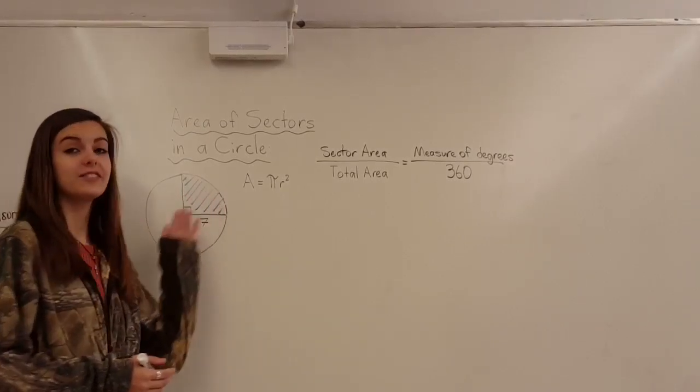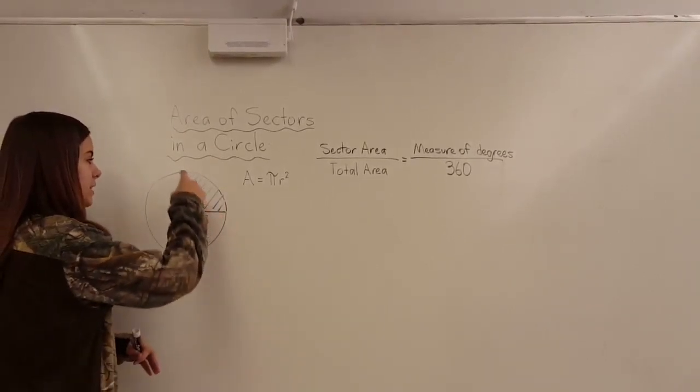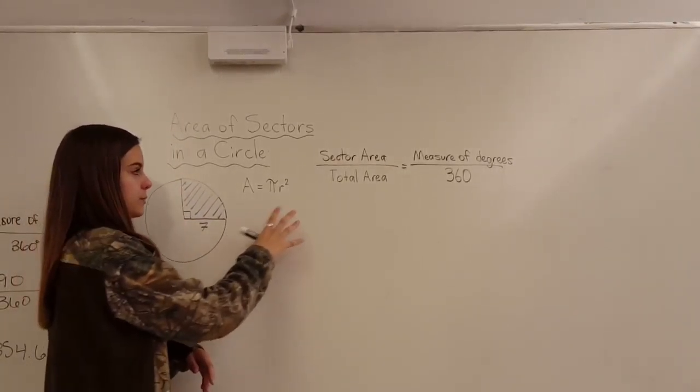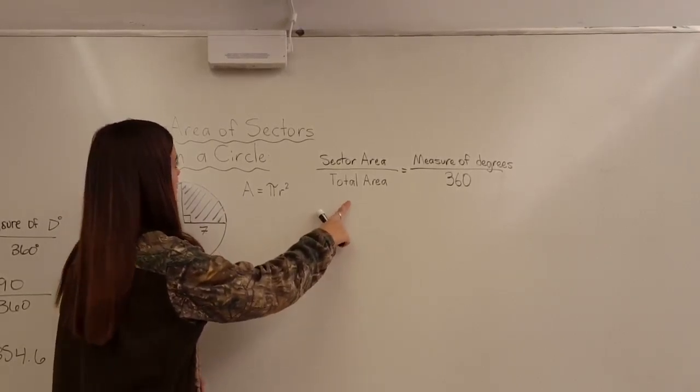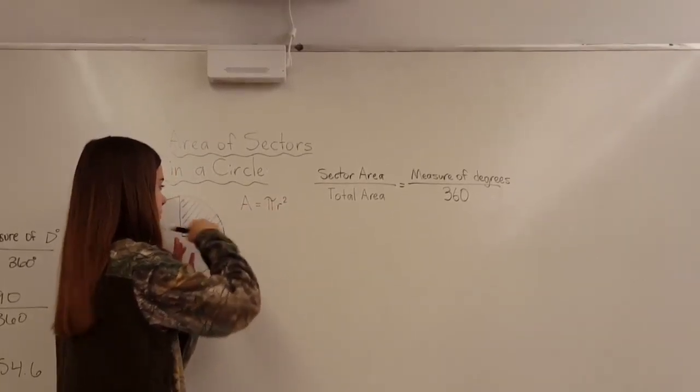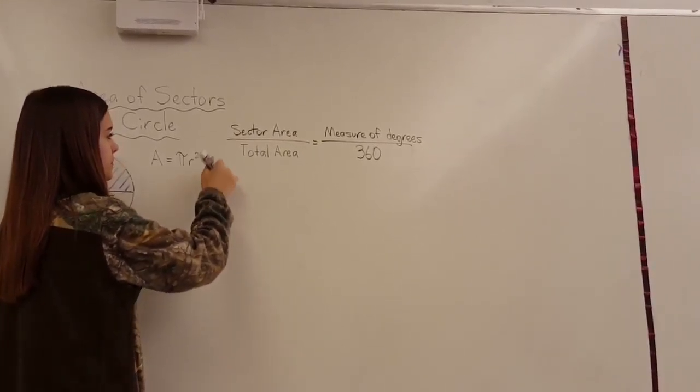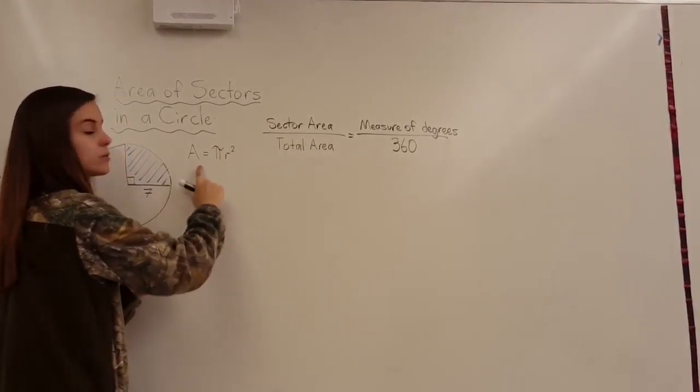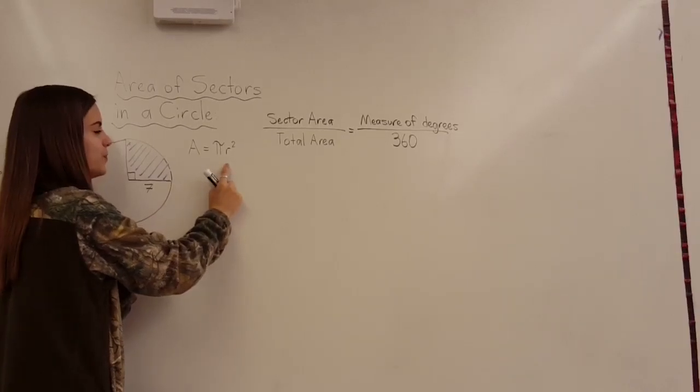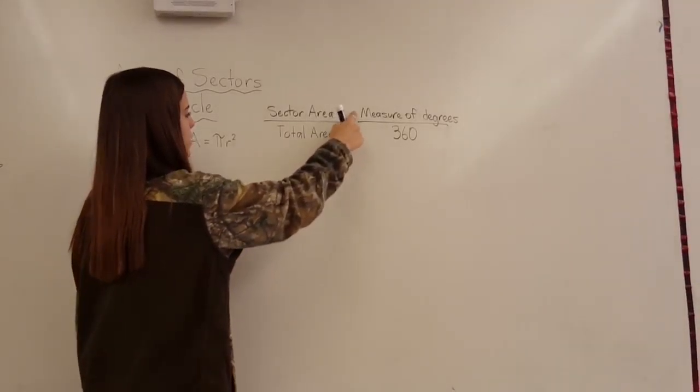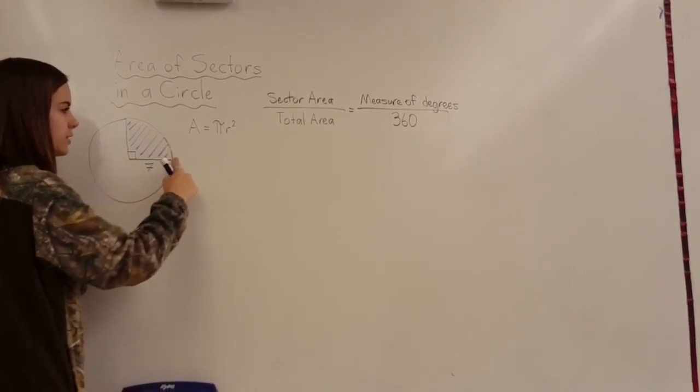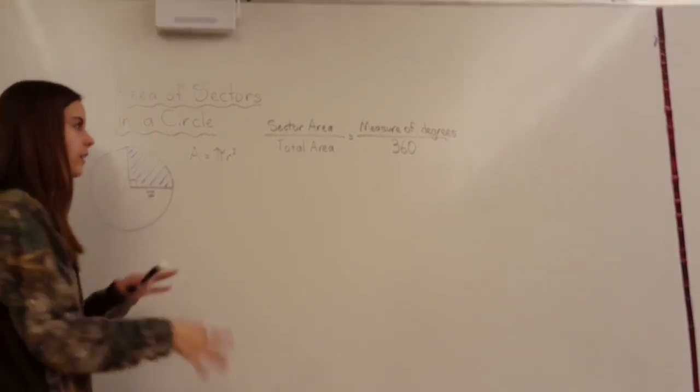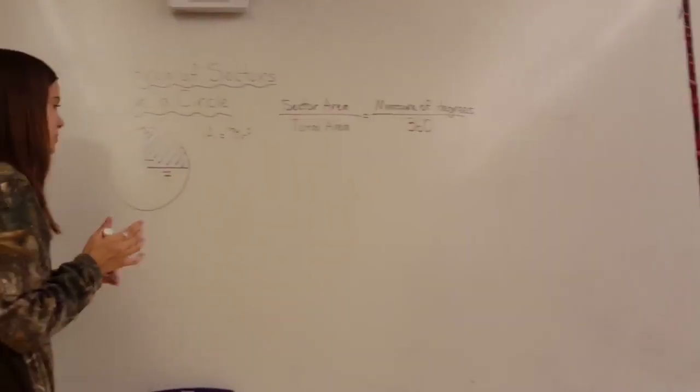Now we're on to area of sectors in a circle. And today we'll be finding the area of this small sector inside the whole circle. Now, here are the formulas that we're going to need. So this is the actual formula for the area of this sector. And what we do is we take the total area, which is what we use this formula for, and we plug it in there. And then the measure of the degrees of just this sector over 360. And then we multiply it all out and find the sector area. So I'm going to do that right now.